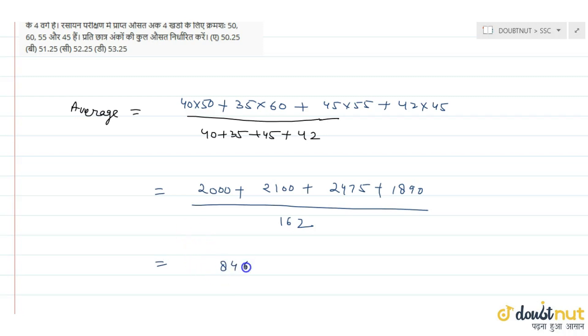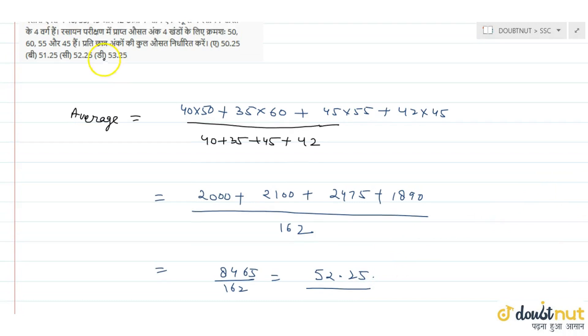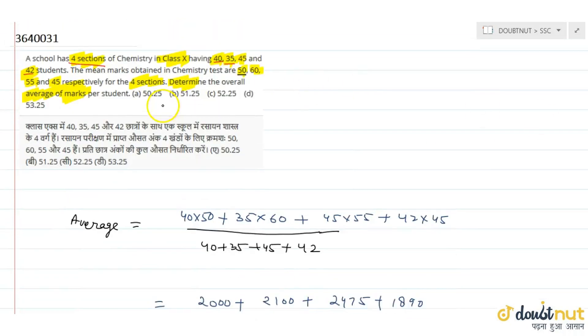8465 divided by 162 equals approximately 52.25. Therefore, this is the average marks of chemistry per student. The correct option is C option, that is 52.25.